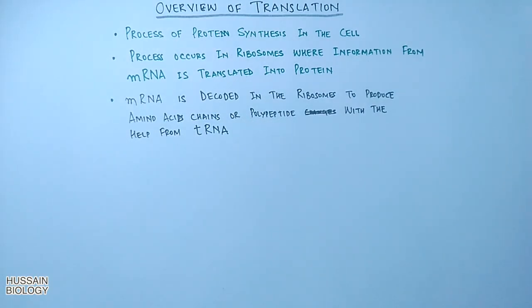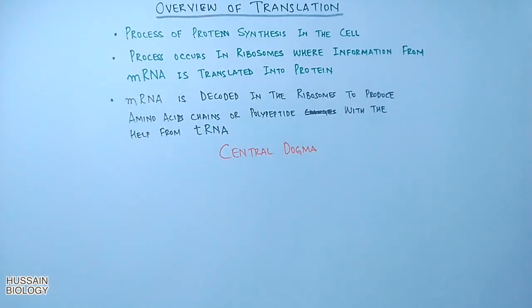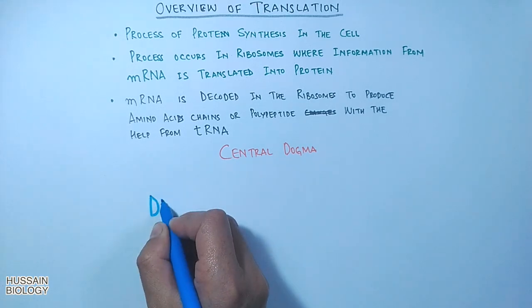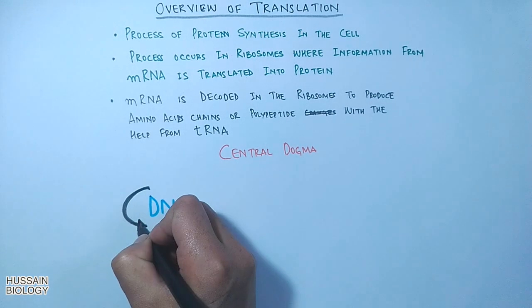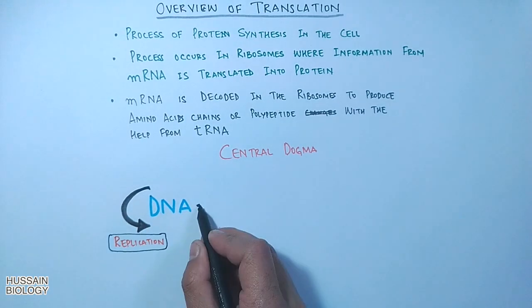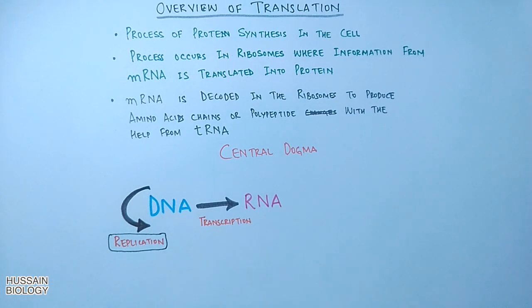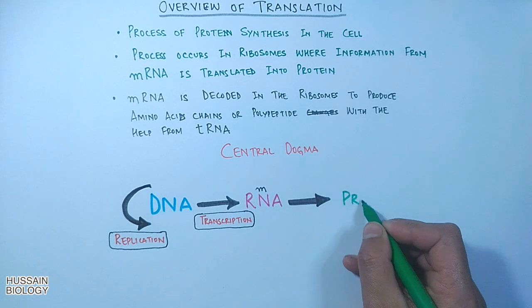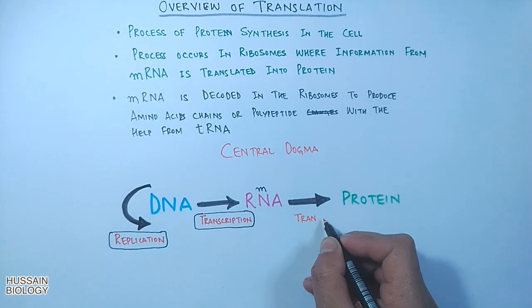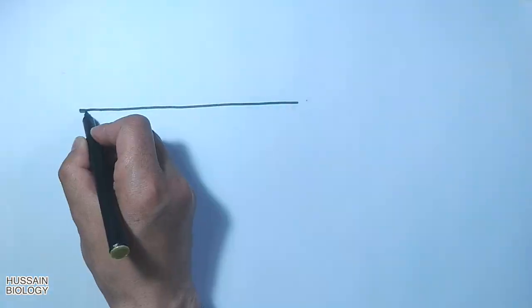Before getting to the translation process, let's have a look at the central dogma of molecular biology which explains the flow of information in biological systems. Here we have the DNA, and when information flows from DNA molecule to DNA molecule, it's the replication process. From DNA to RNA, that's transcription. And when flow of information is from RNA to protein, it's called translation.